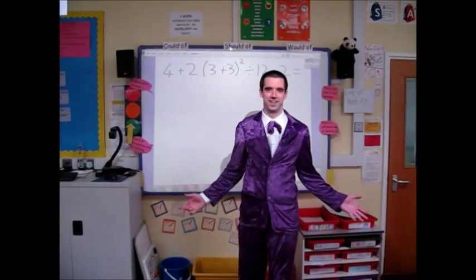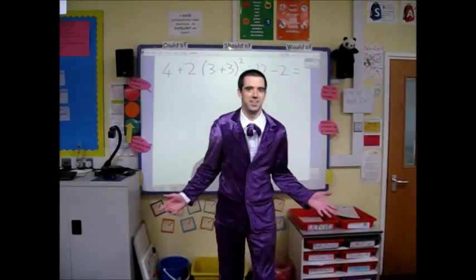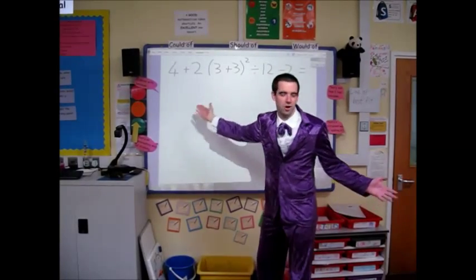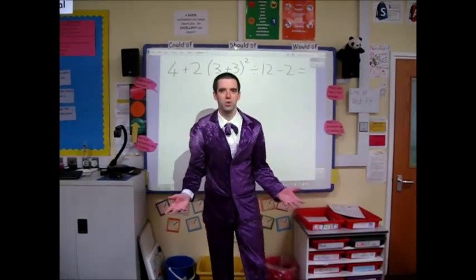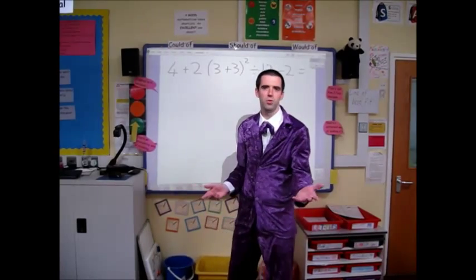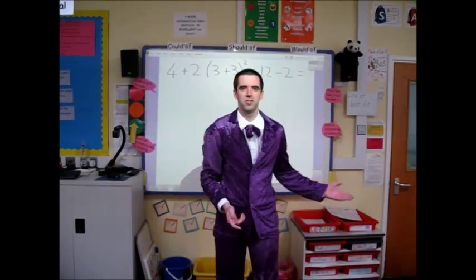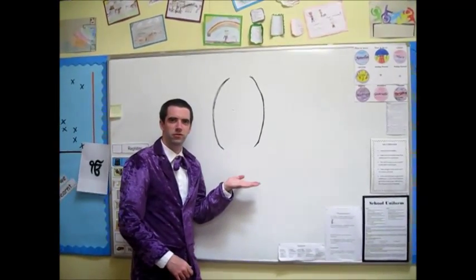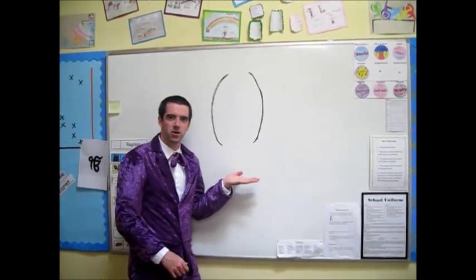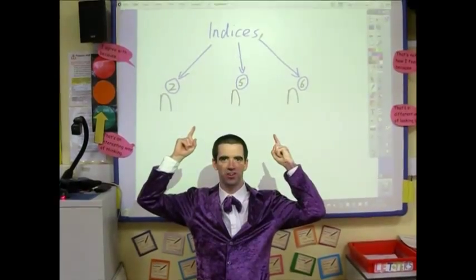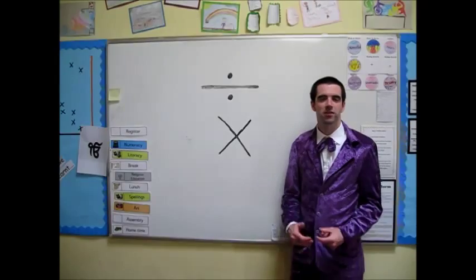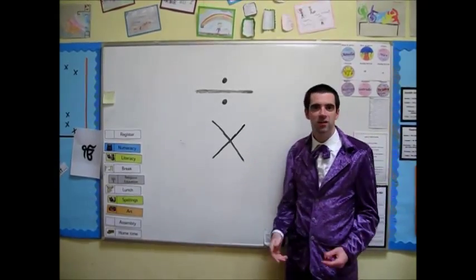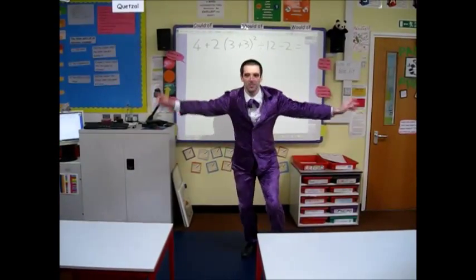Don't be worried by this sight, don't let this question give you a fright. Cause there's an order in which you should tackle this, and I'm gonna explain what it is. You should solve all the brackets first, next indices, then work left to right when it comes to divide and multiply, then the same for add and subtract.